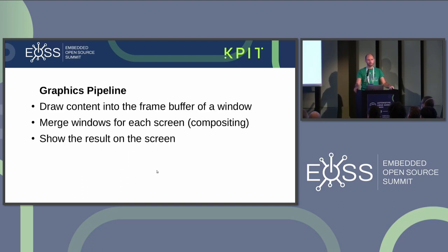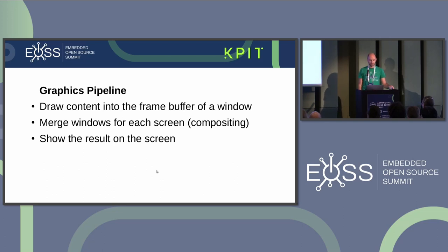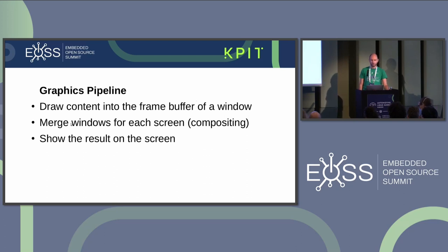Now let's talk about the graphics pipeline. How does any graphics output usually work? Of course there are some exceptions, but here I present the standard workflow. First, we draw the content into the frame buffer of a window — the frame buffer is just a rectangular array of pixels. Then multiple windows for each screen are merged; this process is called compositing. Finally, we show the result on the screen.